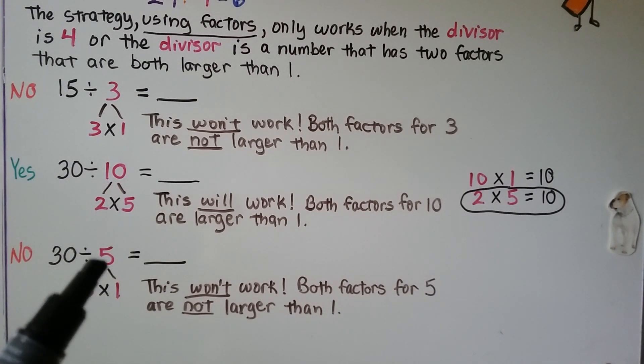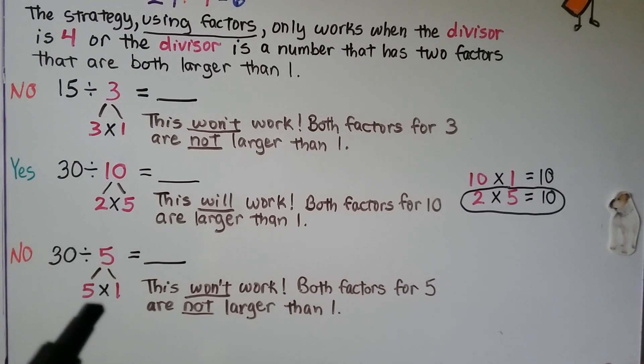30 divided by 5. This won't work using factors because both factors for 5 are not larger than 1. We have a 1 here. So they have to be larger than 1, okay?